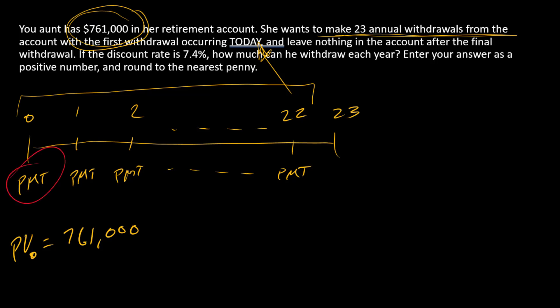So this is the present value of an annuity, except since our first payment is today, we're dealing with the present value of an annuity due.